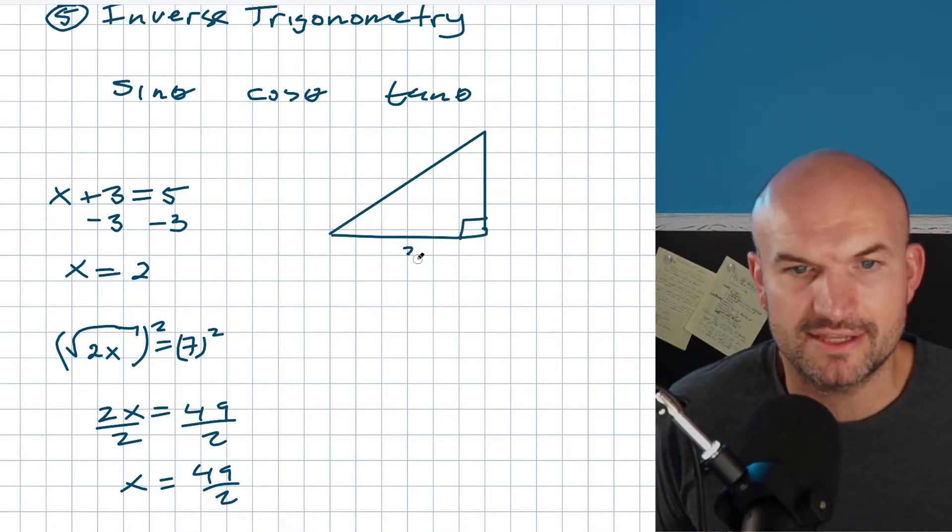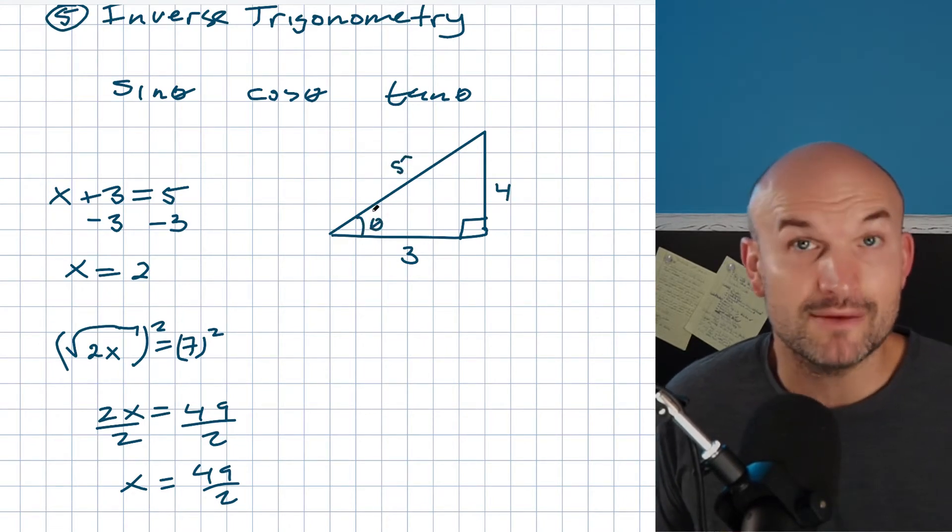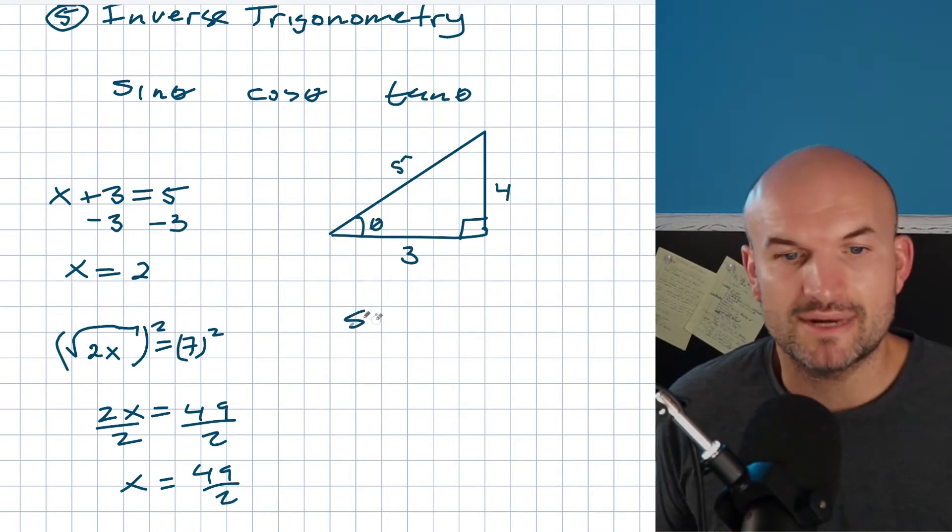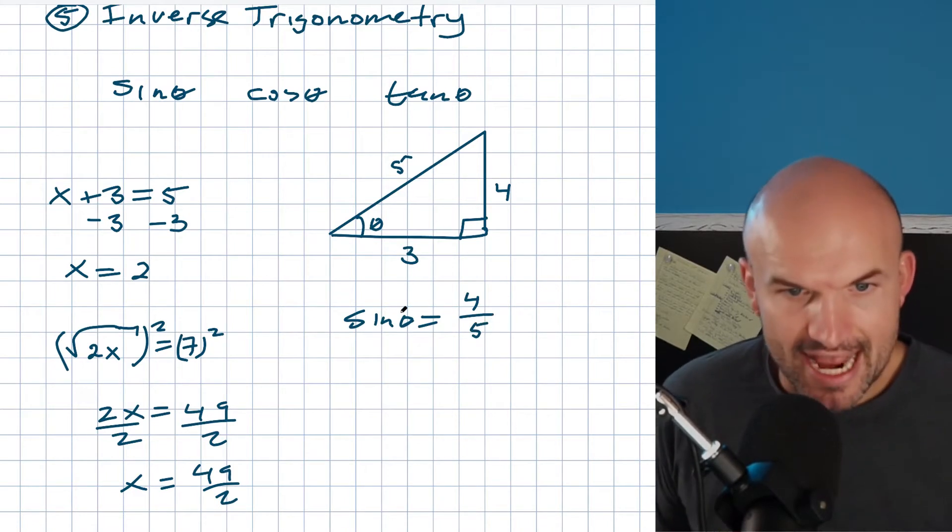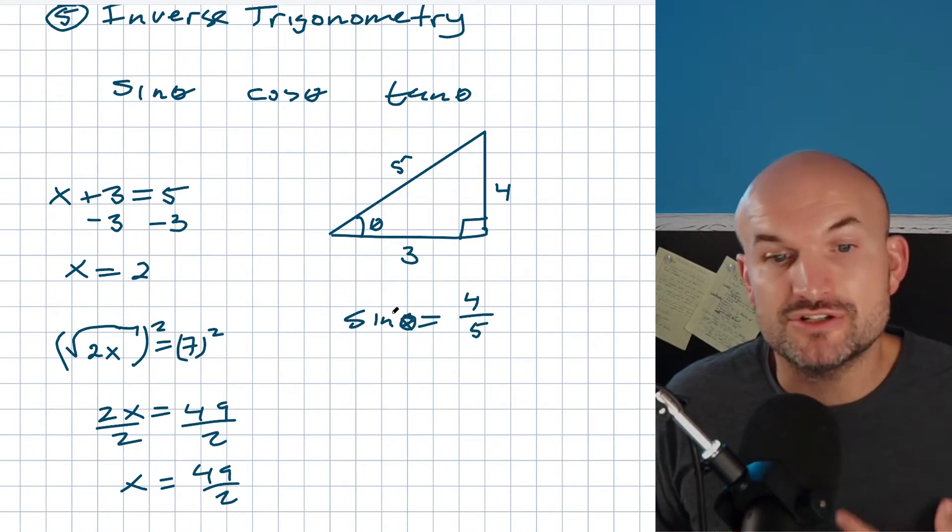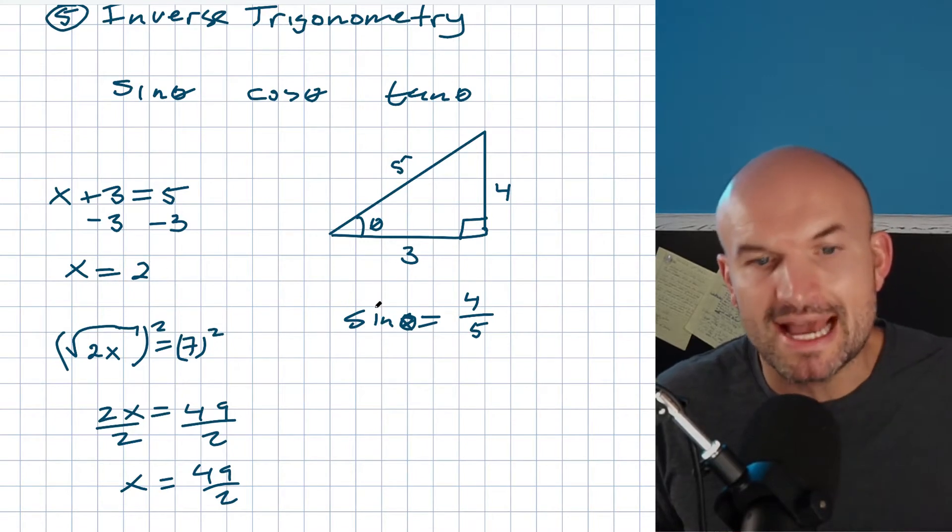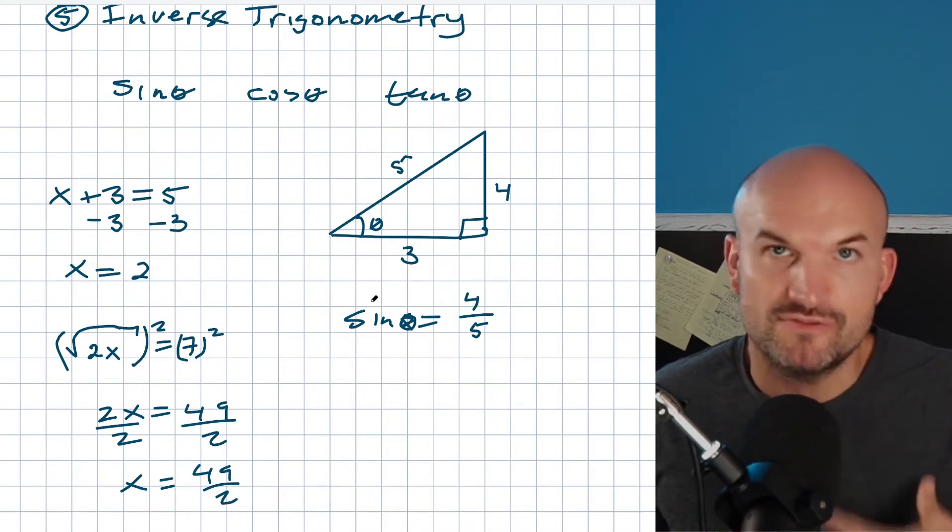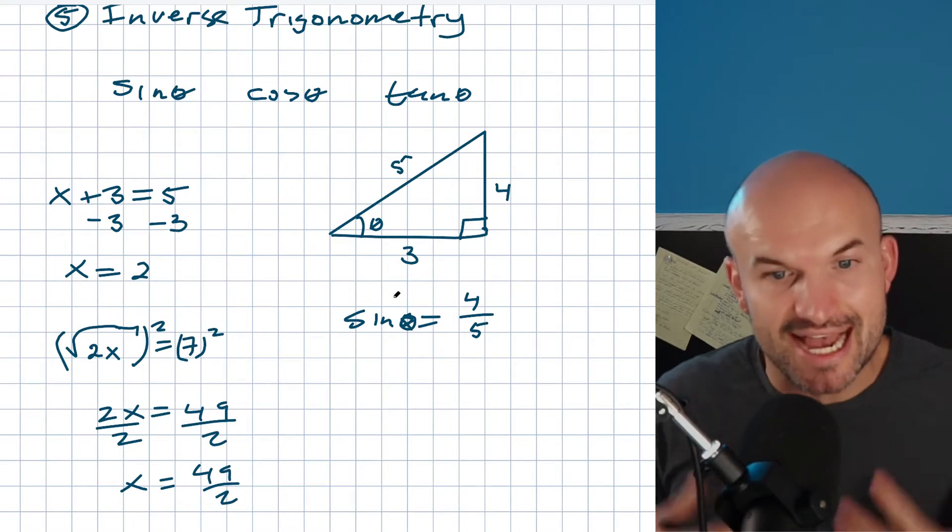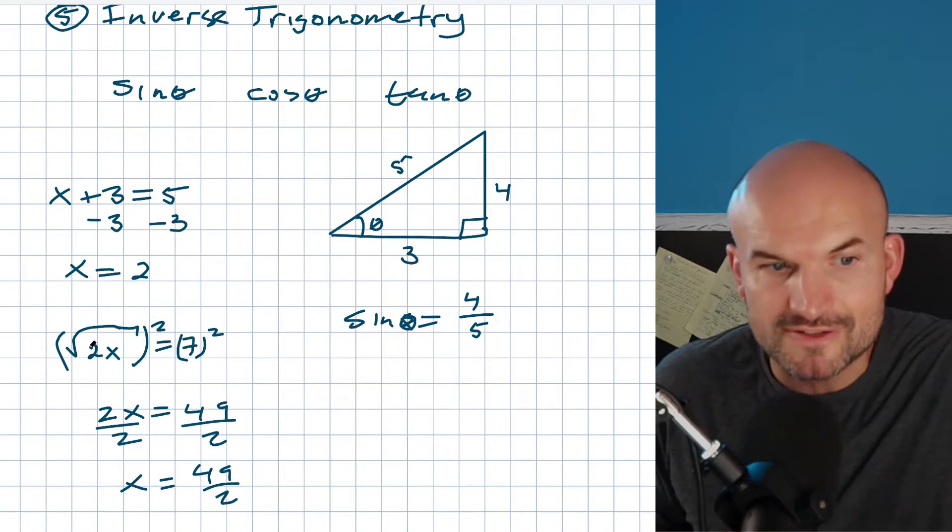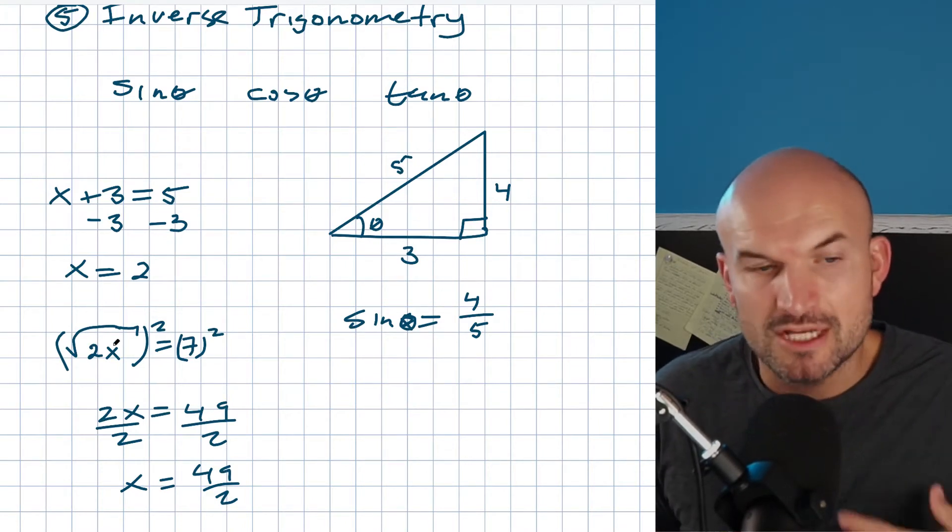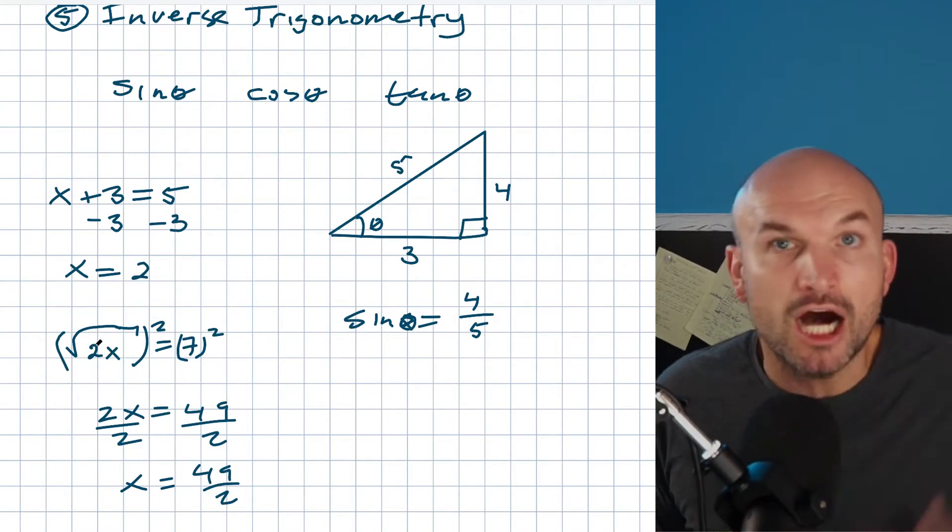Let's say we have a triangle that looks something like this. Here's my theta. We don't know what this angle is, but I can write the relationship of sine of theta equals my opposite side over my hypotenuse. Now let's say I actually wanted to figure out what this angle was. What I need to do is use my inverse operation, because right now what we have is a trigonometric function sine being applied to my theta. It's saying the sine of theta equals four fifths, kind of like over here the square root of 2x equals 7. So what we did is to solve for x we had to undo the square root.